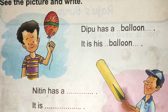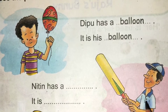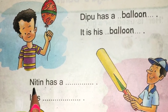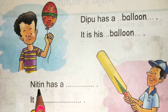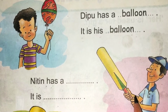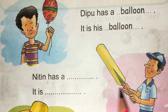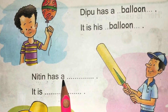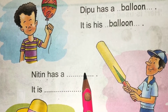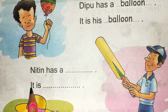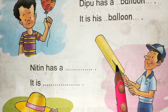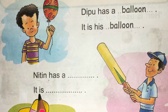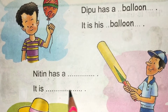In this picture, this is his name. He has a bat. It is his bat. This is his bat.